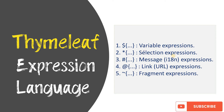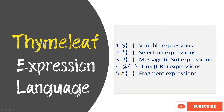Apart from variable expressions, Thymeleaf also provides other expression languages. For example, selection expressions — the syntax is an asterisk sign and then curly braces — used for reading attributes from an object. Then we have message expressions with a hash sign and curly braces, used for reading the .properties file like messages.properties. Next is the link or URL expression with the at-sign and curly braces. And the last one is fragment expression with a tilde sign and curly braces.